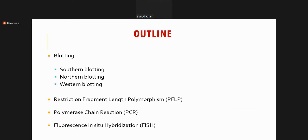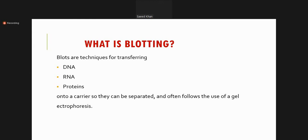There are different blotting techniques including Southern blotting, Northern blotting, Western blotting, and then we have different other techniques like RFLP — restriction fragment length polymorphism — fluorescent in-situ hybridization, and the polymerase chain reaction. These are some of the genetic techniques which can be used in the field of genetics to understand genetics and genetic diseases.